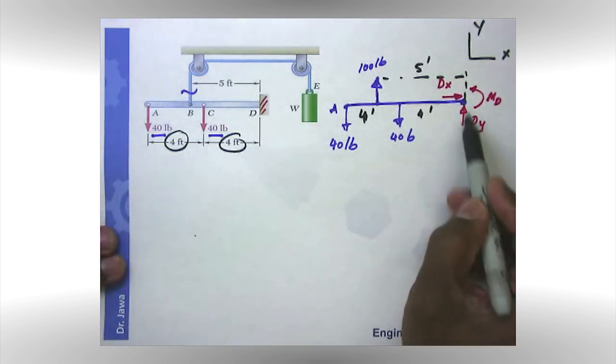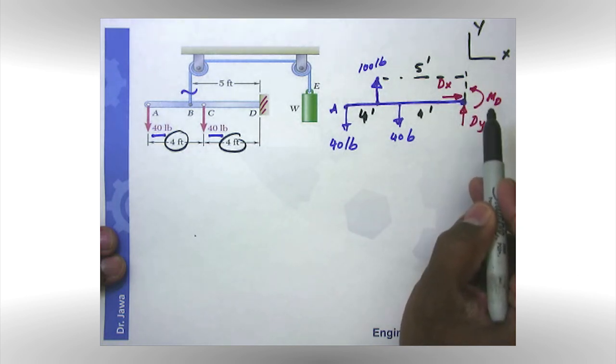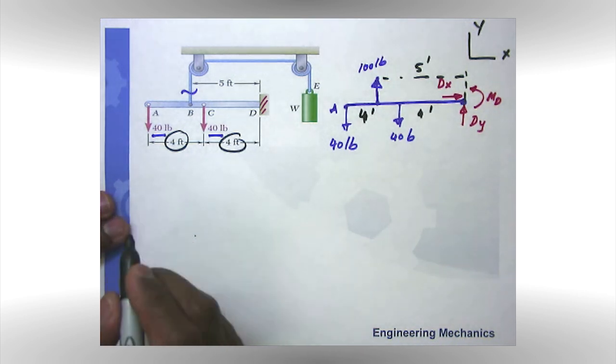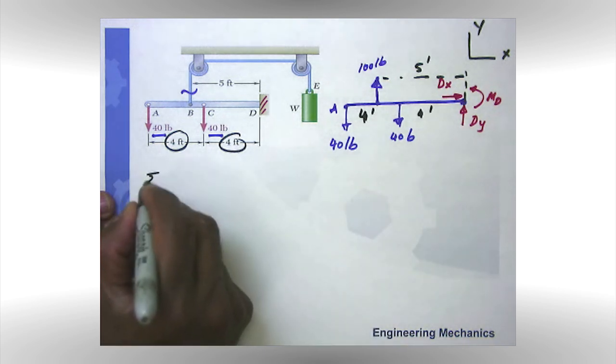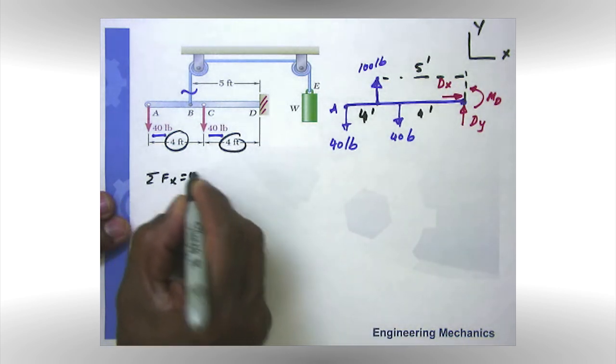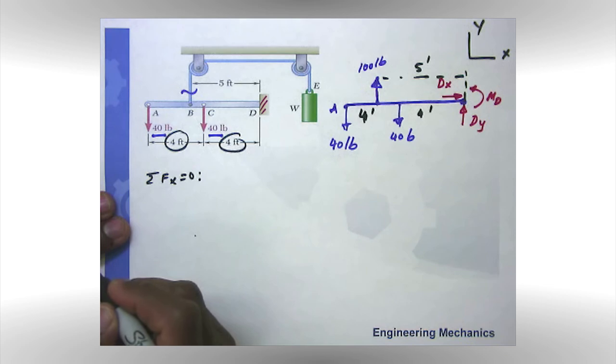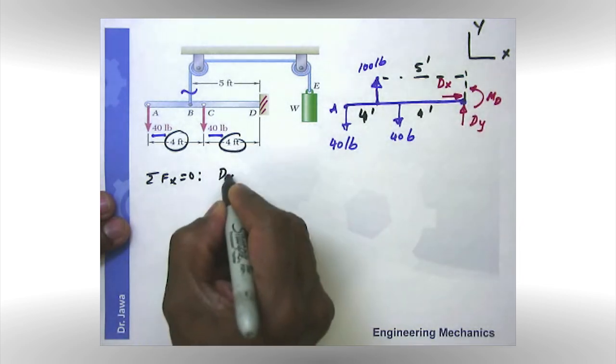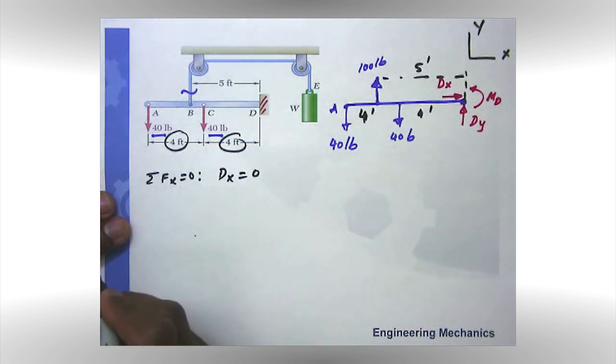And as you recall, there are three support reactions here due to the fixed support. And you also remember that we can write three equations. That means we can solve for all of them. So sum of the forces along x direction should be equal to zero. Our first equation, in this case, there is no force other than D_x. So my D_x is going to be zero. That's my first equation. That also is an answer.